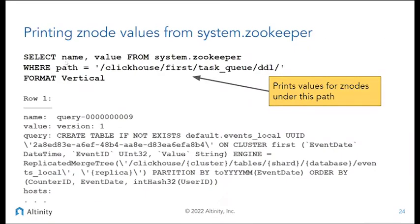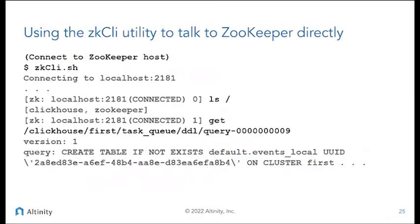Another thing you can do is if you use this correctly, it will actually print the Z node values. This is just another example showing how we can see the commands that are in the DDL queue. Another way to talk to ZooKeeper if you need to know what's in there is ZK CLI — that's the basic tool that comes with ZooKeeper. It's pretty primitive and really painful to use.